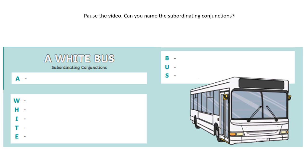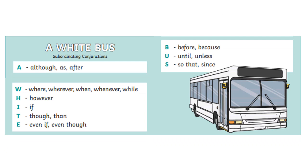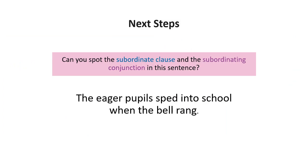Hopefully you got most of those. Under A: although, as, after. Under W: where, wherever, whenever, when, while. Under H: however. Under I: if. Under T: though, than. Under E: even if, even though. Under B: before, because. Under U: until, unless. Under S: so that, since.